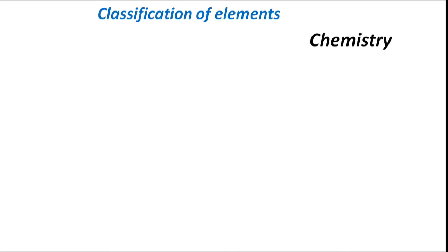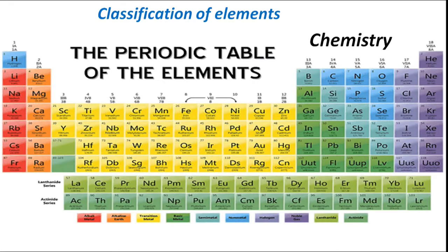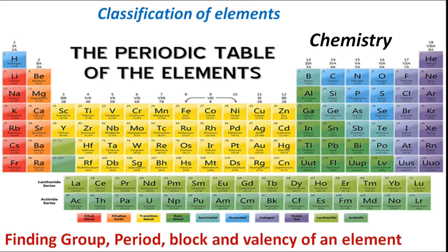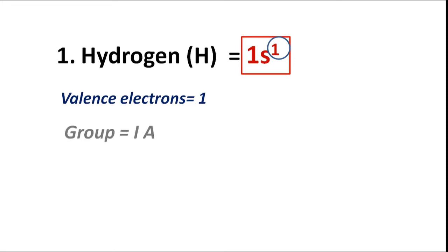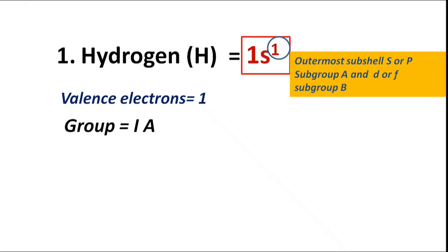This video is related to classification of elements — finding group, period, block, and valency of elements from hydrogen to calcium, or from atomic number 1 to 20. Atomic number 1 is hydrogen, with electronic configuration 1s1. The valence shell is K, and the number of valence electrons is equal to 1, hence group IA.